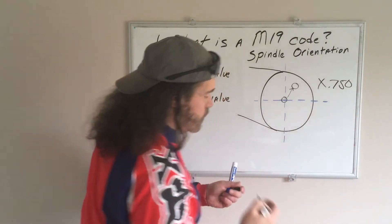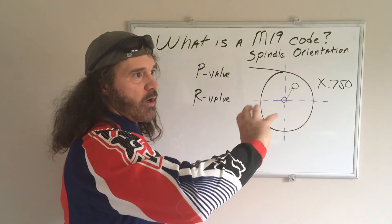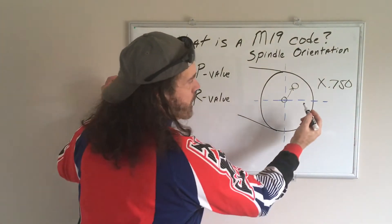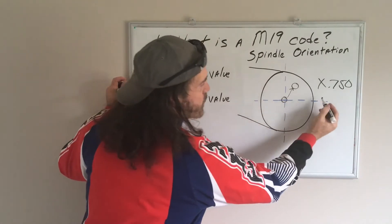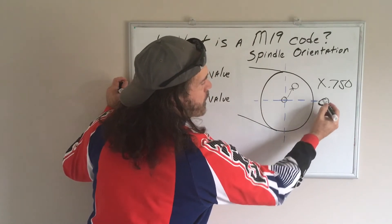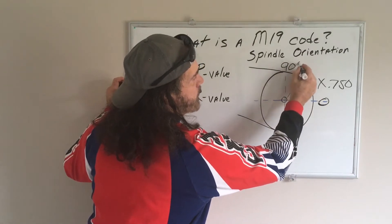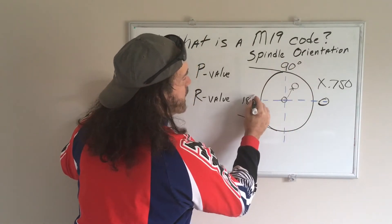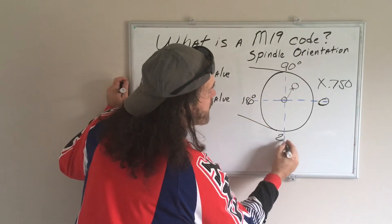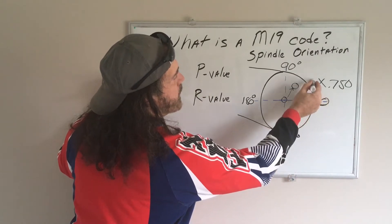Now we have to figure out where you want the hole to go angularly. This direction would be zero degrees, this would be 90 degrees, this would be 180 degrees, and this would be 270 degrees — so it goes around like this.